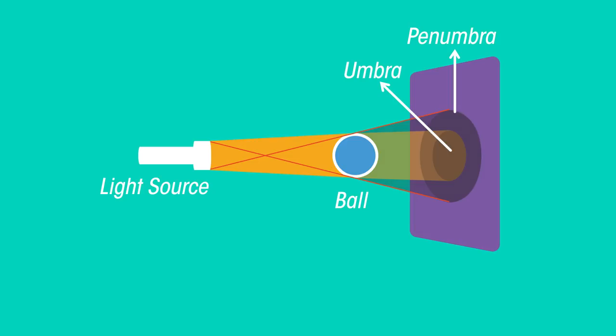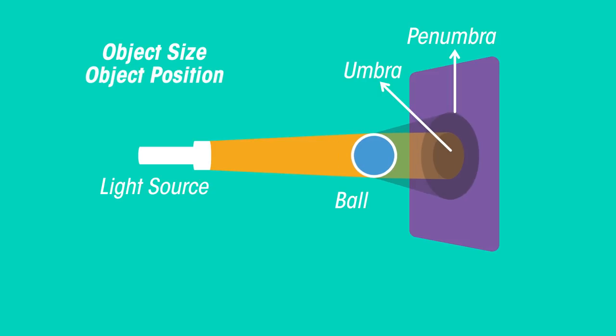The size of the umbra and penumbra depend on the size of the object and also the position of the object relative to the light source.